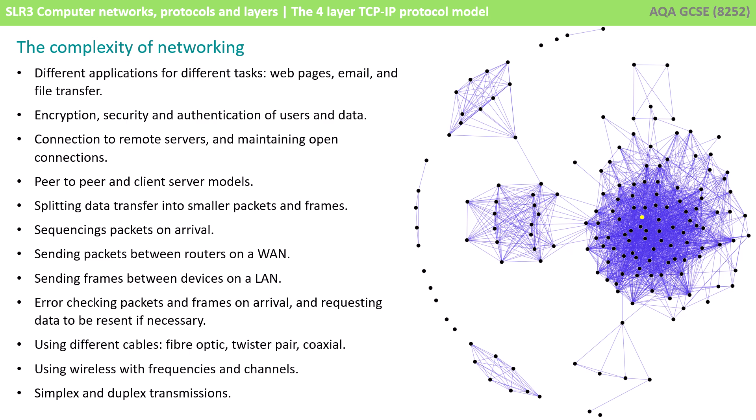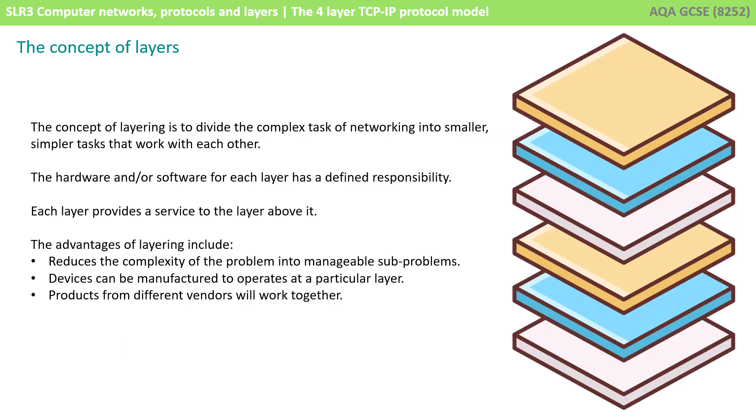We might be using wireless with frequency and channels. And we might be transmitting data in one direction, or both directions one at a time, or both directions simultaneously, which is known as duplex. Transferring data between two points on a wide area network or local area network is a very complex operation and we need a way of simplifying it. The concept of layers is about taking a very difficult problem and dividing it down into smaller sub-problems, which reduces the complexity into manageable sub-problems. It means that devices can be manufactured to operate at a particular layer and products from different vendors will simply work together quite happily.